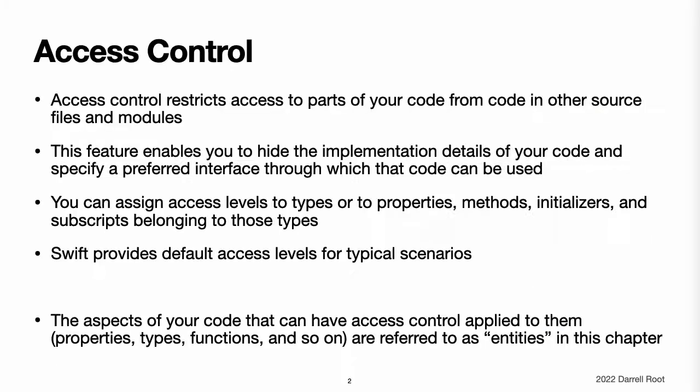Access Control. Access Control restricts access to parts of your code from code in other source files and modules. This feature enables you to hide the implementation details of your code and to specify a preferred interface through which that code can be accessed and used. You can assign specific access levels to individual types, classes, structures, and enumerations,